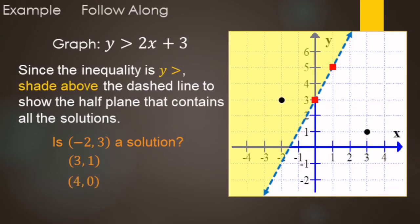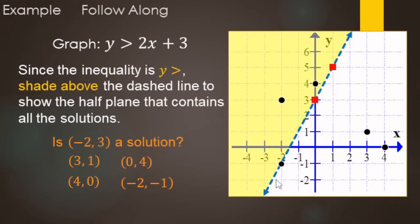What about (4, 0)? That point is not a solution. What about (0, 4)? Zero, 4 is on the y-axis and it is in the shaded area — so yes, it is a solution. And (-2, -1)? Negative 2, negative 1 is right on the line. Since this is strictly greater than and the line is dashed, points on the line are not solutions, so no for this one.